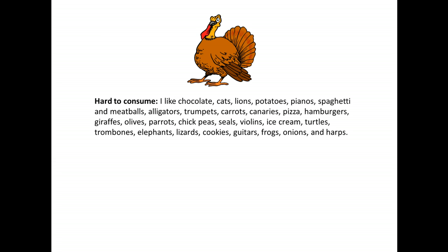Consider this long, unorganized list: 'I like chocolate, cats, lions, potatoes, pianos, spaghetti and meatballs, alligators, trumpets, carrots, canaries, pizza, hamburgers, giraffes, olives, parrots, chickpeas, seals, violins, ice cream, turtles, trombones, elephants, lizards, cookies, guitars, frogs, onions and harps.' Aside from being a very long sentence, if I asked you now to close your eyes, how many of those could you remember? It's very hard, right?